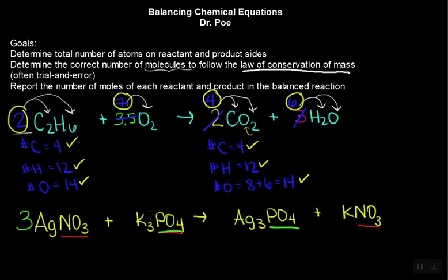This gives us now three nitrates. So to balance that, put another three right here. So now we have three nitrates. This now gives us three potassium as well, which is what we have over here. So go ahead, pause the video, add up all the atoms, and see if this is now balanced.